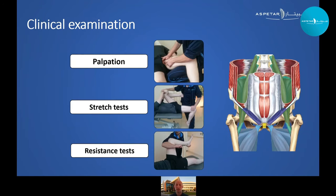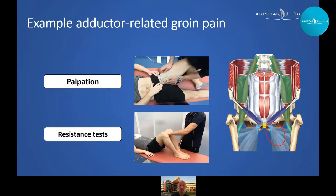The clinical examination is mainly based on pain provocation tests during palpation, stretch, and resistance testing. During these tests, it's always important to ask for recognizable injury pain in the area you want to test. For example, for adductor-related groin pain, the definition is pain in the adductor area reproducible by palpation and pain in the adductors during resisted adduction testing. If a patient reports pain during these tests, we classify it as adductor-related groin pain.